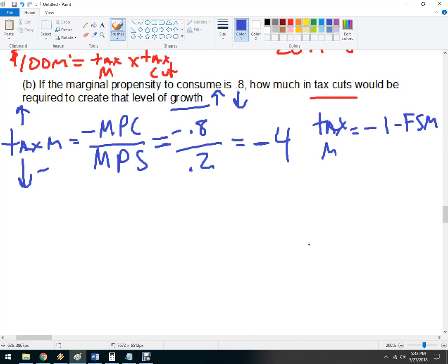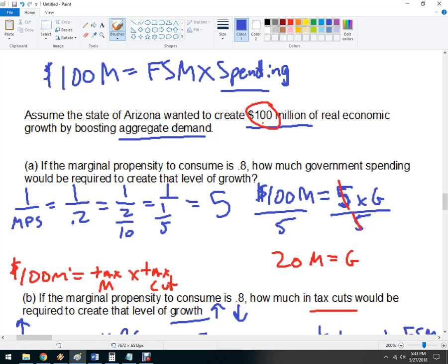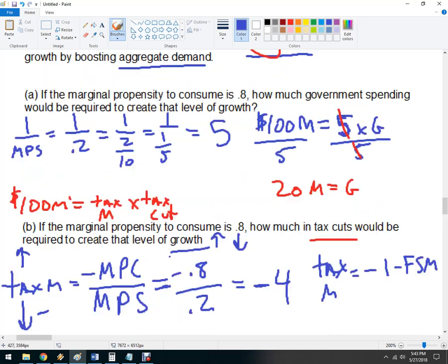So, it's going to take more in tax cuts to get to that, because here, nobody gets to hold on to this money. They just spend it. Right? So, we're going to get spending back in the economy. But here, people have a choice, and people will often save some of it. And we see that here in the MPS.